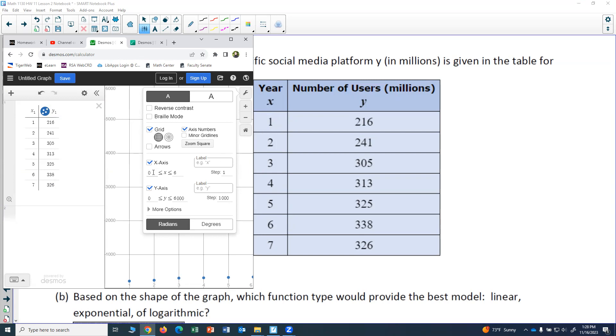So I might start at x equals zero and I want my highest x on the window to be higher than my largest x value in the table. In the table my largest x value is 7, so I'm going to change my highest x for the grid to an 8.